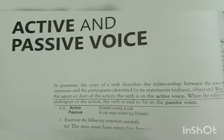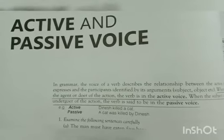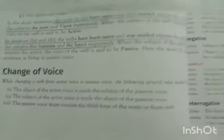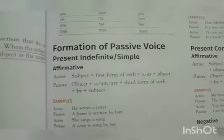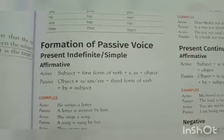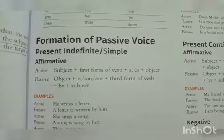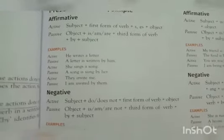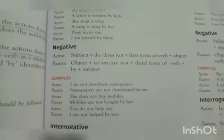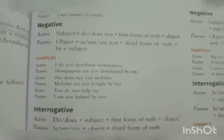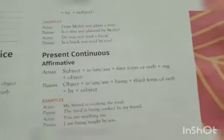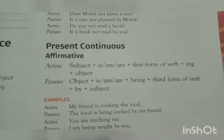Good morning students. In our previous video we started with the topic of active and passive voice, in which we read about the change of voice and what criteria we have to follow while changing the voice. The first one we read about was present indefinite simple, which had four sections: affirmative, negative, and interrogative having both positive and negative ones. Now moving on to the second rule relating to present continuous.